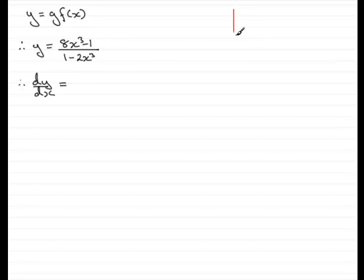what we use is the quotient rule. And that is if you've got y equals a function of x, let's call it u, over another function of x, call it v. So in this example, u is the 8x cubed minus 1, and v is 1 minus 2x cubed.